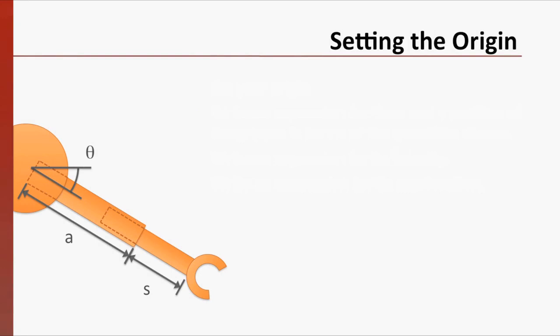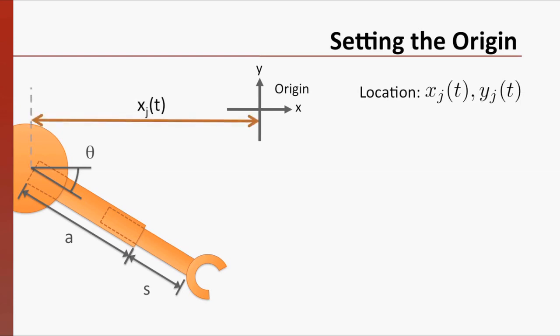Let's take a look at the answer. First, we need to choose an origin. Let's choose an arbitrary location as the origin of our coordinate system. Our robot's joint may be moving, so we will use a pair of functions, x sub j of time and y sub j of time, to describe its location. x sub j will be the horizontal distance from our origin to the joint, and y sub j will be the vertical distance.